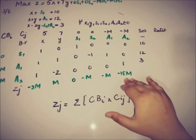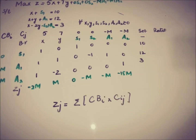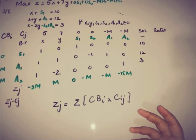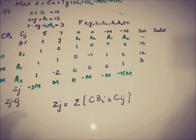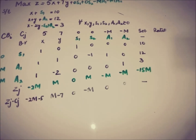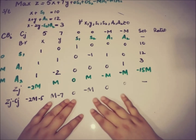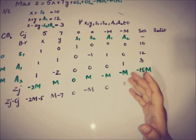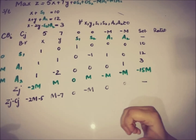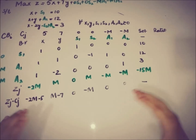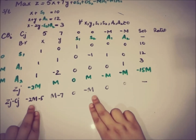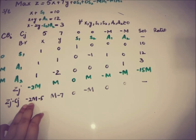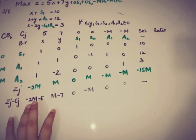The next step is to find ZJ minus CJ to check optimality. The values are: -2M - 5, -M - 7 (which is M - 7), 0, -M, and 0. Since M is a very large quantity, the most negative entry is -2M - 5, because its coefficient 2 is greater than 1, making it more negative than the other candidates.